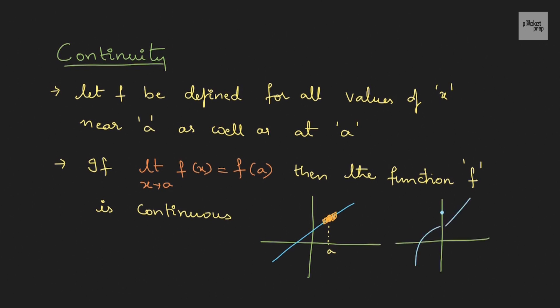Sometimes the graph could look different. In this graph we can see the limit exists because the left-hand side and right-hand side values are equal, but the function's value is not the same as the limit value. In that case we say the function is not continuous.